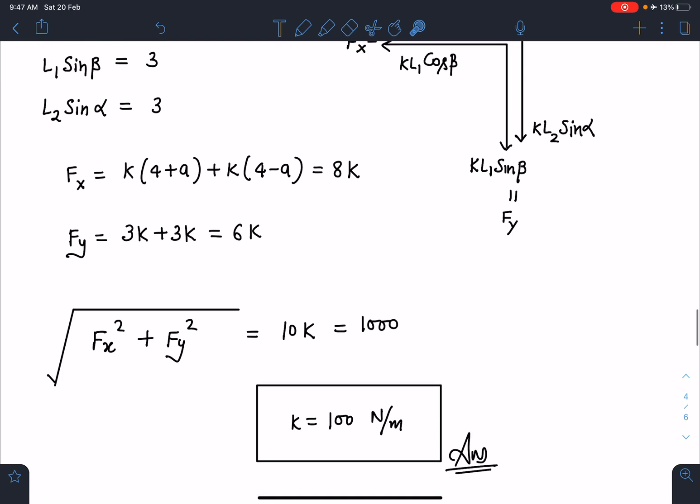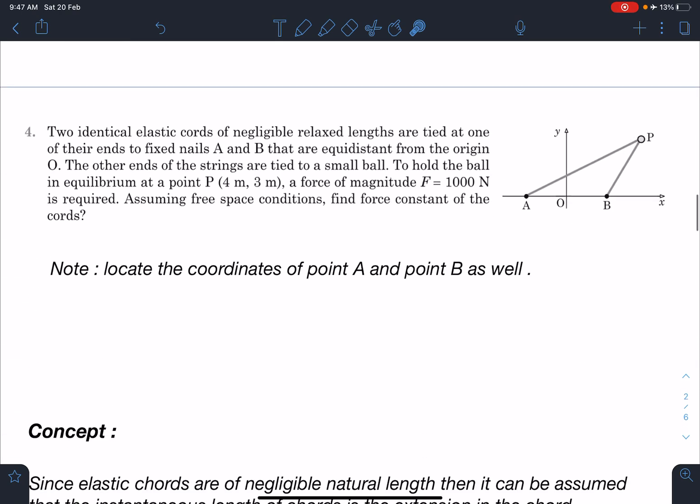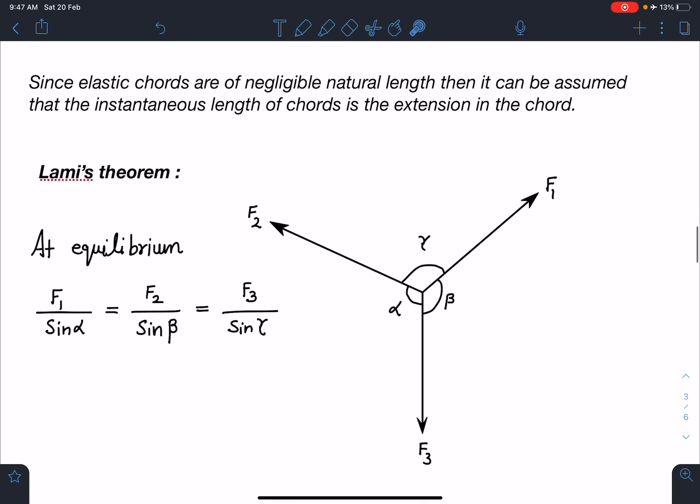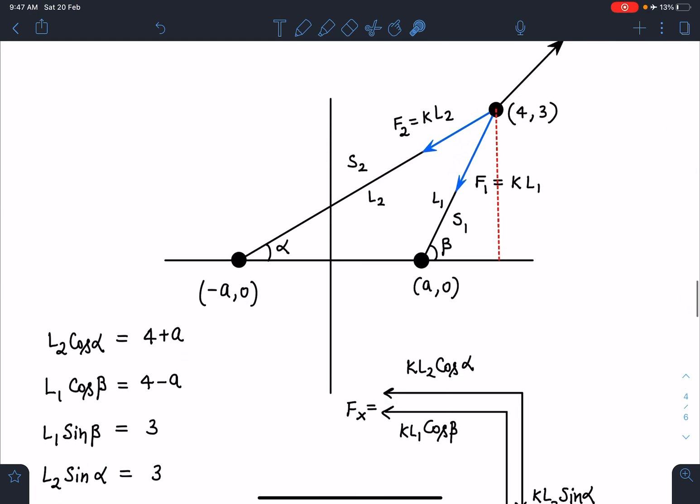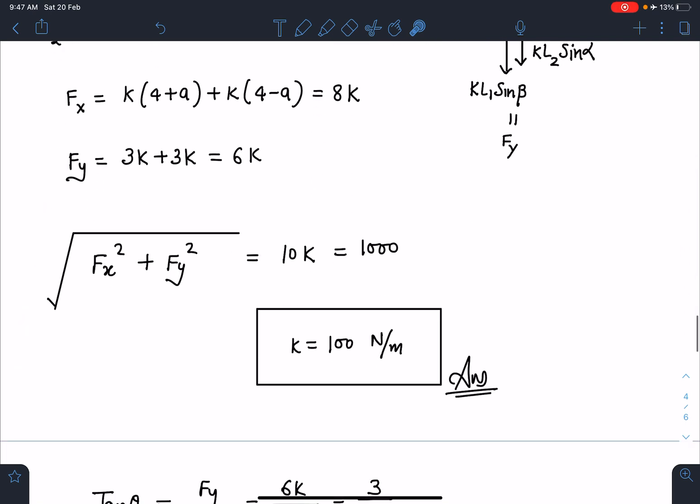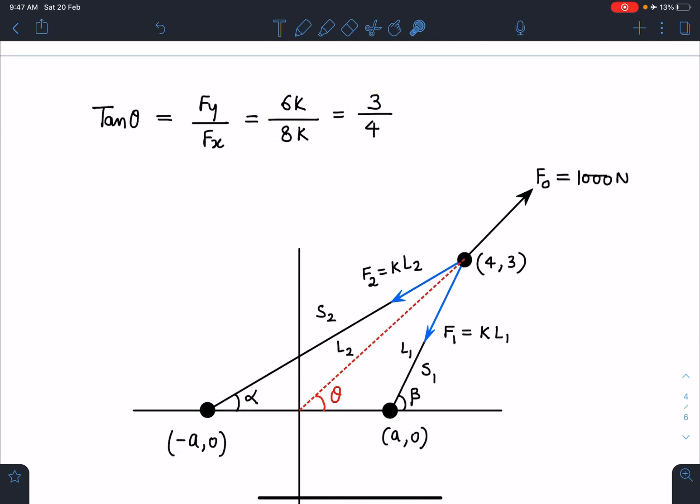This question can be part of mains or advance. It's a very easy problem even though it's from pathfinder, but a very important application of strings of negligible length. These results we are able to write and solve so beautifully only because of strings of negligible length. If you write tan θ which is Fy/Fx, you get 3/4.